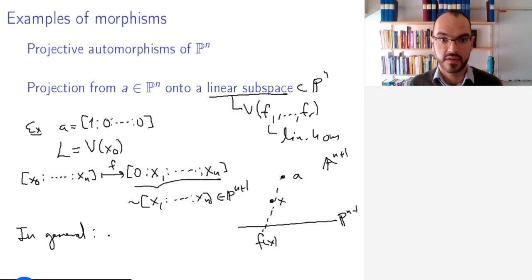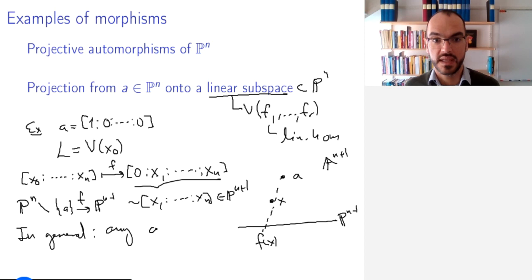And I can do this in general. So this will give me a map from ℙⁿ minus A to ℙⁿ⁻¹. And in general, I can do this for any A in ℙⁿ and any ℙⁿ⁻¹ inside ℙⁿ not containing